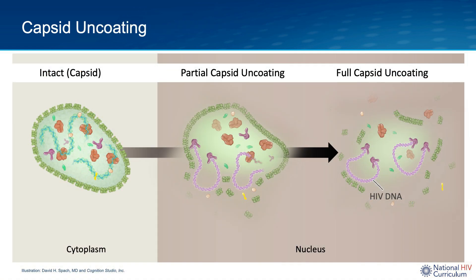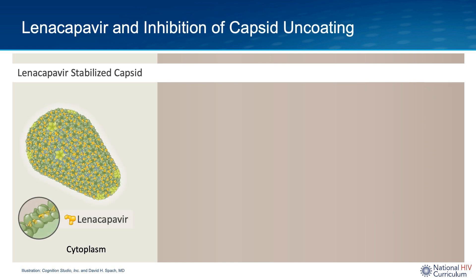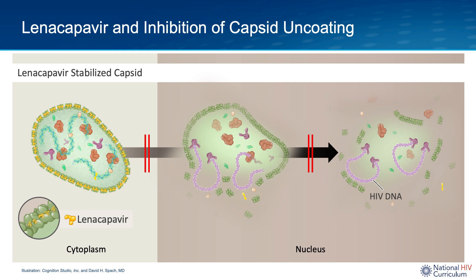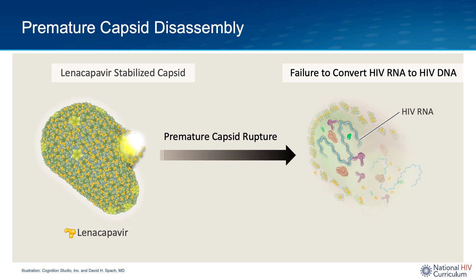The HIV capsid has a major challenge since it needs to remain stable while moving through the cytoplasm to protect the contents within the core, but it needs to uncoat and disassemble inside the nucleus to release the newly reverse-transcribed HIV DNA. When linacapavir is bound to the HIV capsid, it creates an overall increased stiffness of the capsid lattice. This hyperstabilization of the capsid lattice prevents the normal uncoating of the capsid shell. In addition, the hyperstabilization of the capsid can lead to premature rupture or cracking of the capsid before the HIV RNA has converted to HIV DNA. This has been referred to as lethal hyperstability of the capsid.